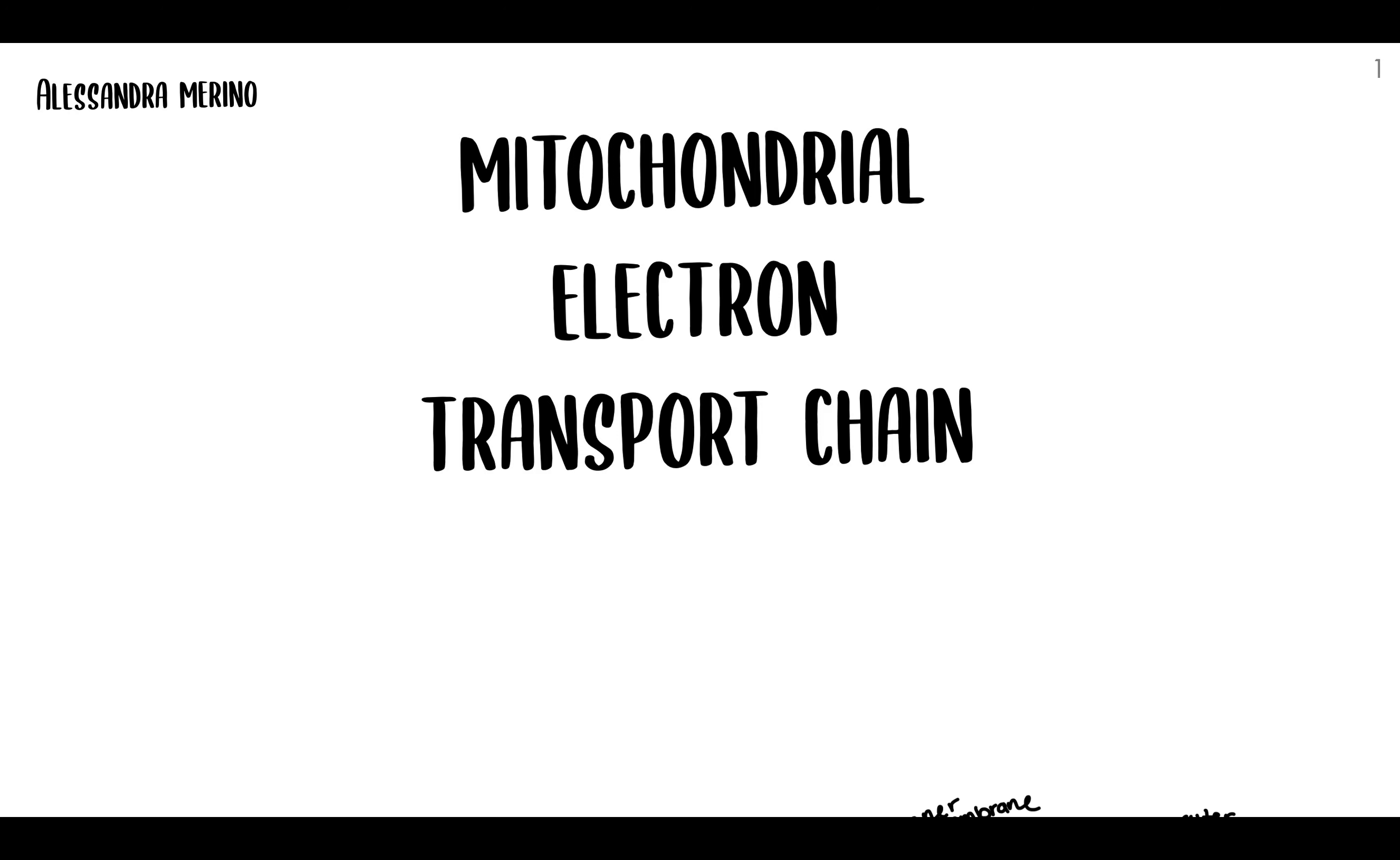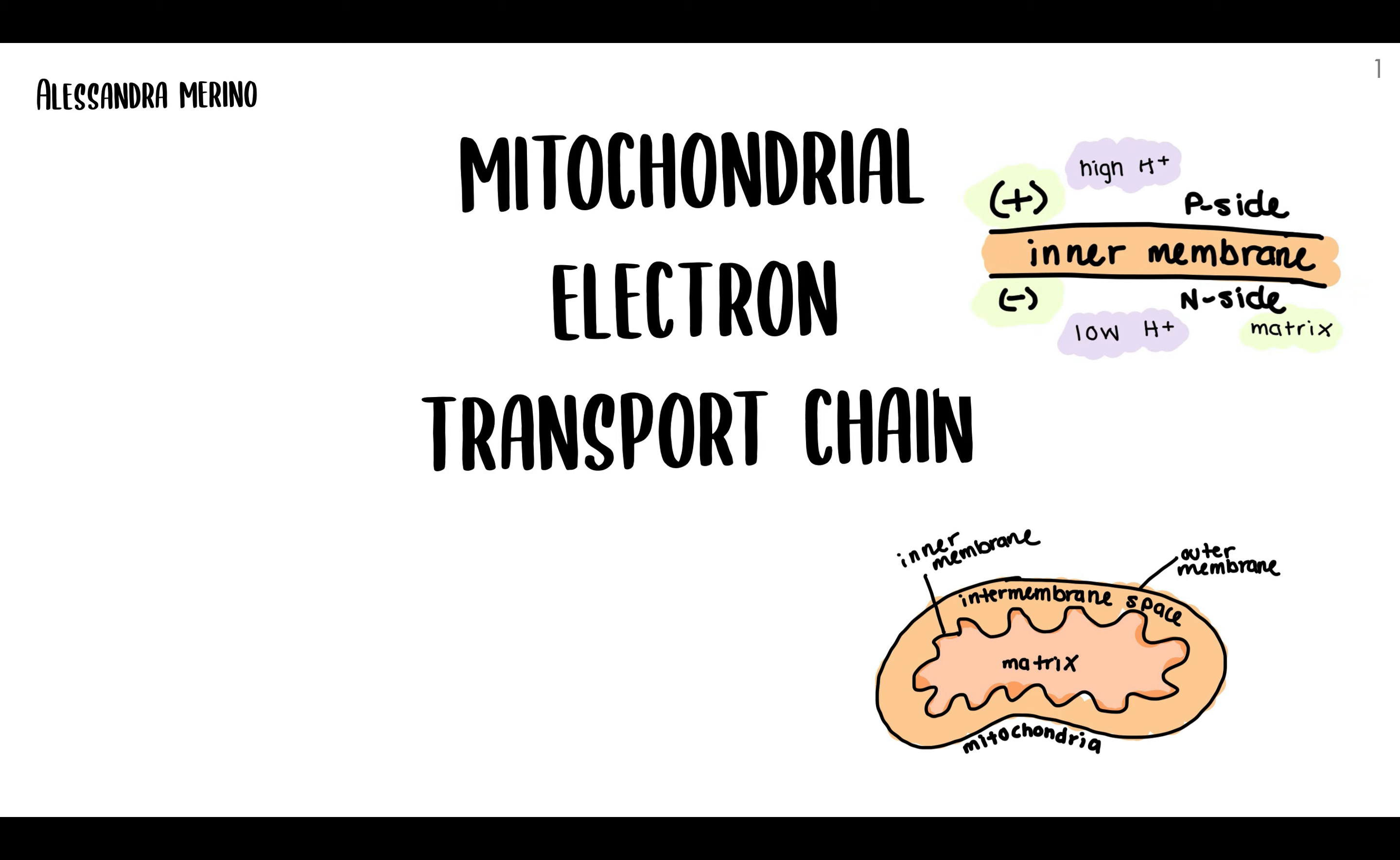First thing to point out is the site for the ETC and where oxidative phosphorylation takes place, and that's the mitochondria. I wanted to quickly outline the mitochondria structure. You can see here in my drawing that you have the matrix, then the inner membrane which leads to the intermembrane space, and finally the outer membrane of the mitochondria. Here is another close-up where you have the inner membrane, and then the P side which is high in protons, and then the N side which is negatively charged and is the matrix of the mitochondria. I hope you can picture these diagrams as we move along to the more complicated features of the ETC.